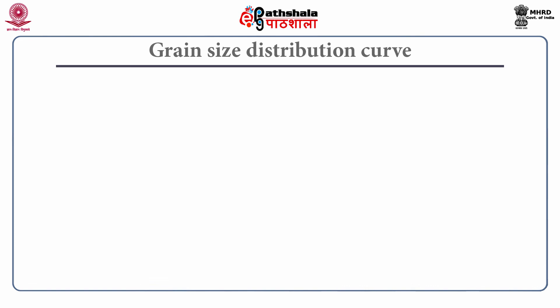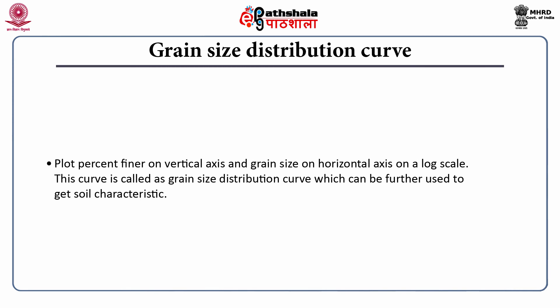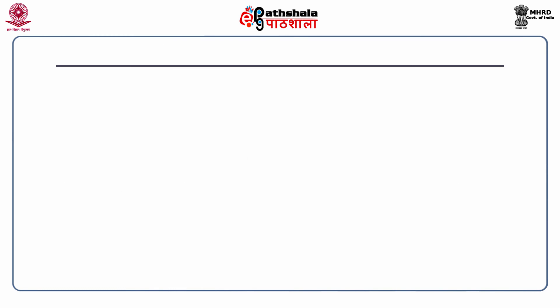To get the final grain size distribution curve, plot percent finer on the vertical axis and grain size on the horizontal axis. This has to be done on a log scale. This curve is called the grain distribution curve, which can further be used to obtain soil characteristics.